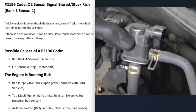One thing that can cause an engine to run rich is a stuck-open purge valve. This is more common in some vehicles than others — many Ford engines are notorious for the purge valve getting stuck open, causing the engine to run rich, which the O2 sensors will report back to the computer. I've made a video on how to test these — I'll put a link in the description.